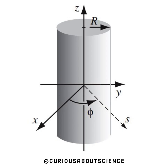Let's draw it out. We have a cylinder with XYZ coordinates, where R is the distance from the Z axis, S is some point in space, and φ is the azimuthal angle.